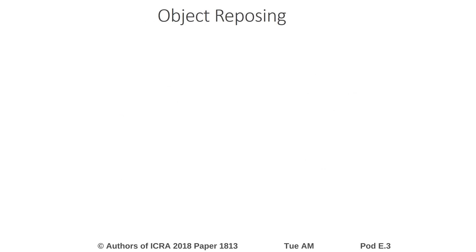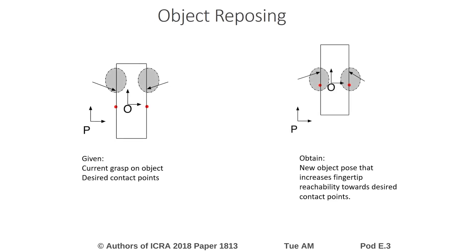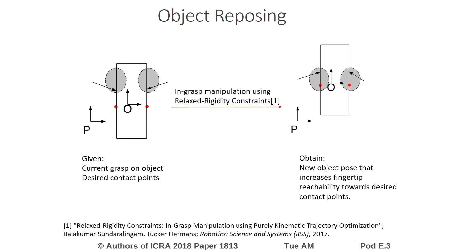Our second in-hand manipulation primitive reposes the object with respect to the palm. We extend our previous work on in-grasp manipulation by introducing a new cost term. The new cost term shifts the kinematic reachability region of the fingertips towards the desired contact points.